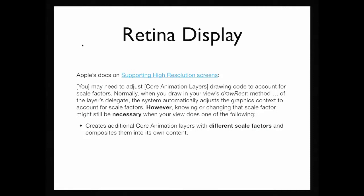Now I'm going to condense six months of screwing around in my spare time into a list of notes and a pre-canned demo. This is from Apple's docs before I get into exactly how to fix it. If you read supporting high resolution screens, which is what I read and then I got what I just showed you, you may need to adjust core animation layers drawing code to account for scale factors. Normally, however, comma, knowing or changing that scale factor might still be necessary. When you're viewed as one of the following. Create additional core animation layers with different scale factors and composites them into its own content. Now that's not exactly what CATiledLayer does, but it's definitely dealing with different scale factors. It's that twigged in my mind going, okay, I'm going to have to get in there and do something else.